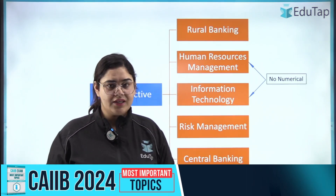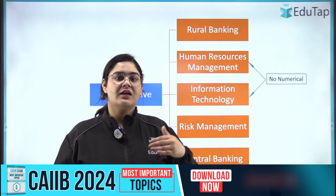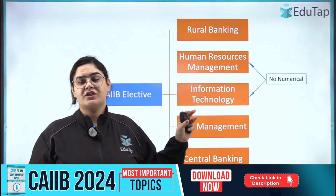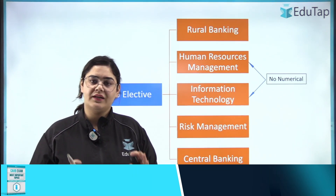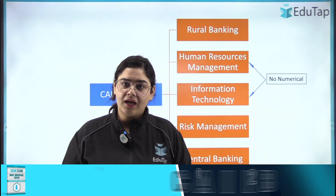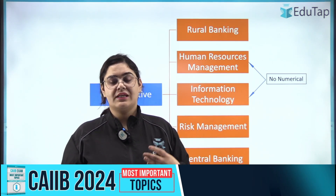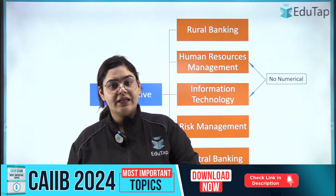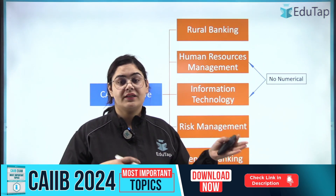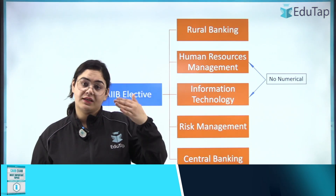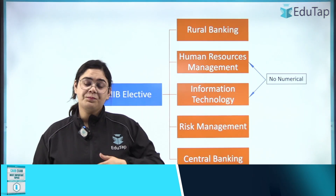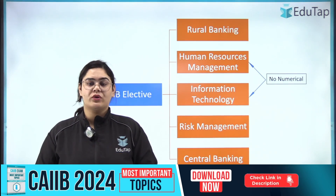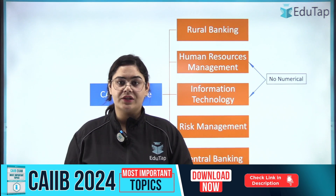HRM is a very easy subject. You can also cover it alongside compulsory subjects, so this subject is my recommendation. You can look at the syllabus yourself, see your interest, see your educational background, and after that select your elective.